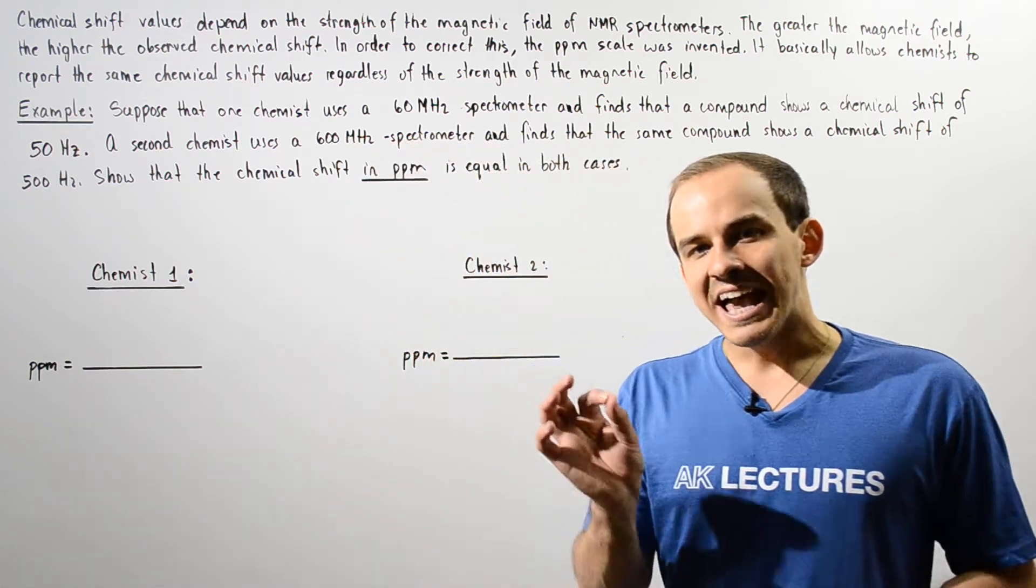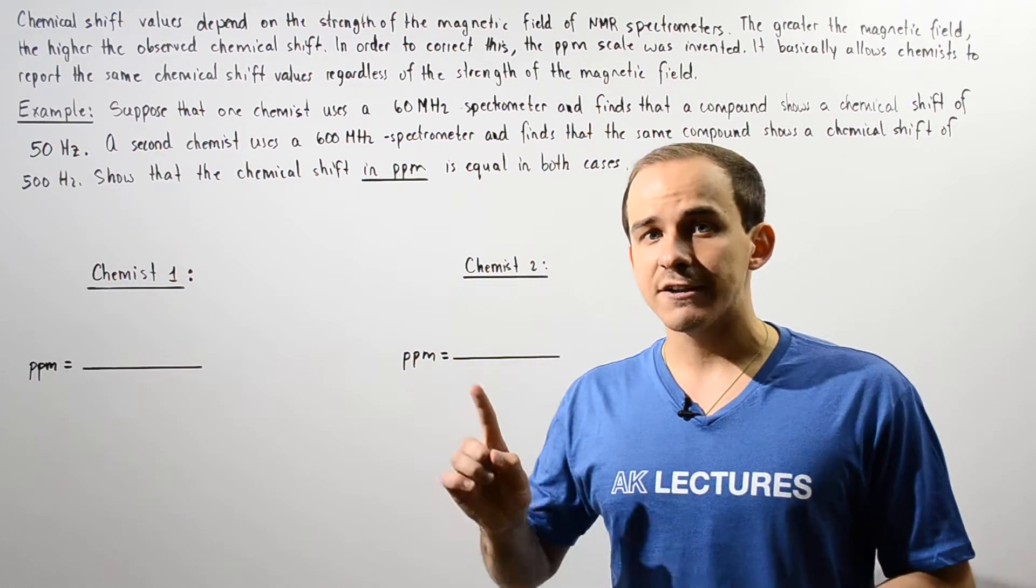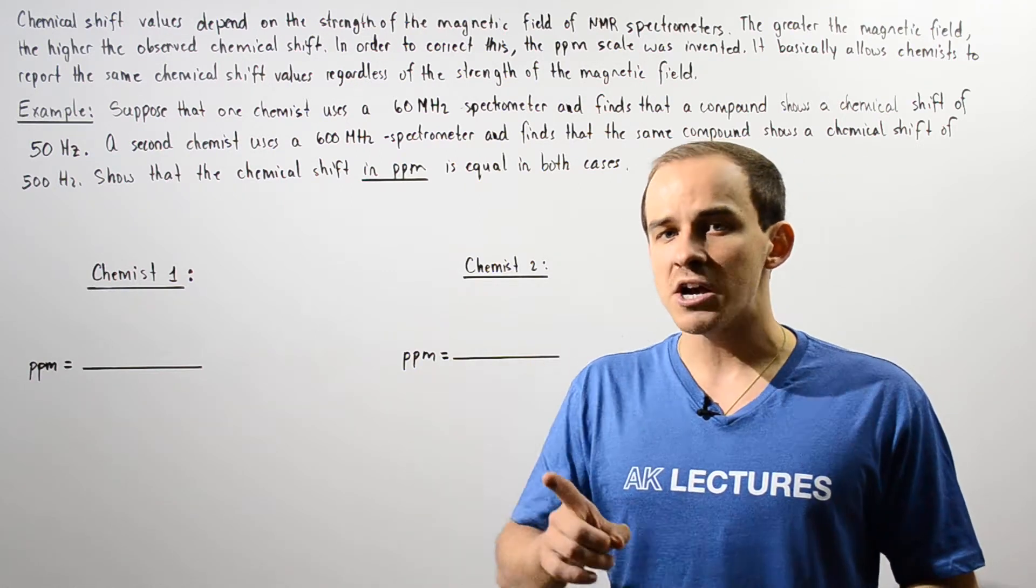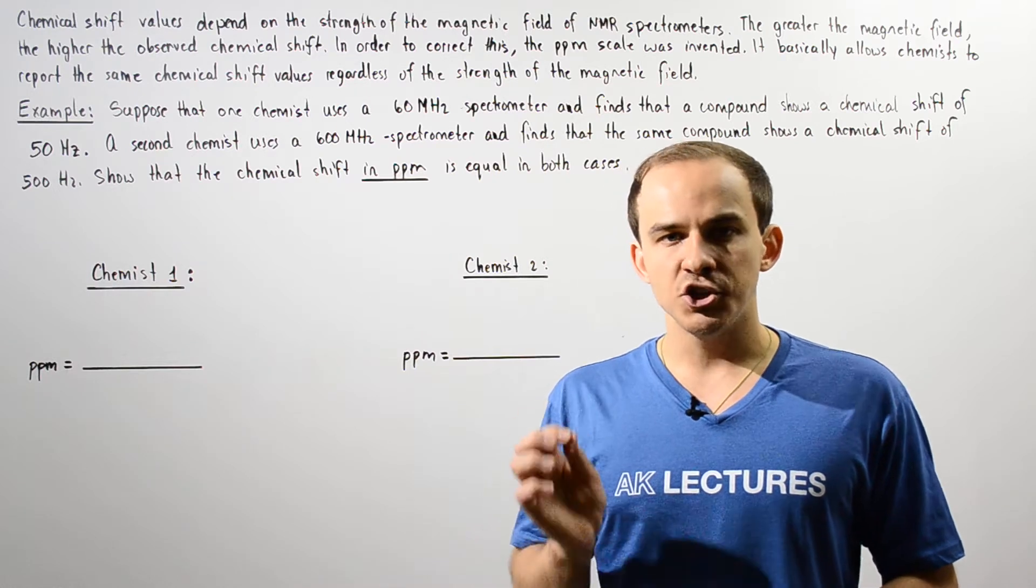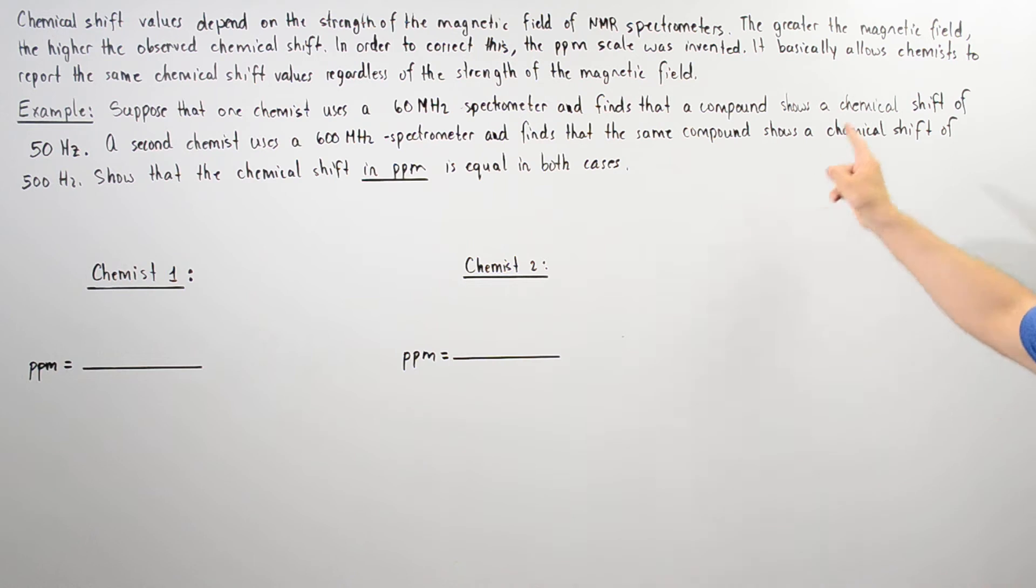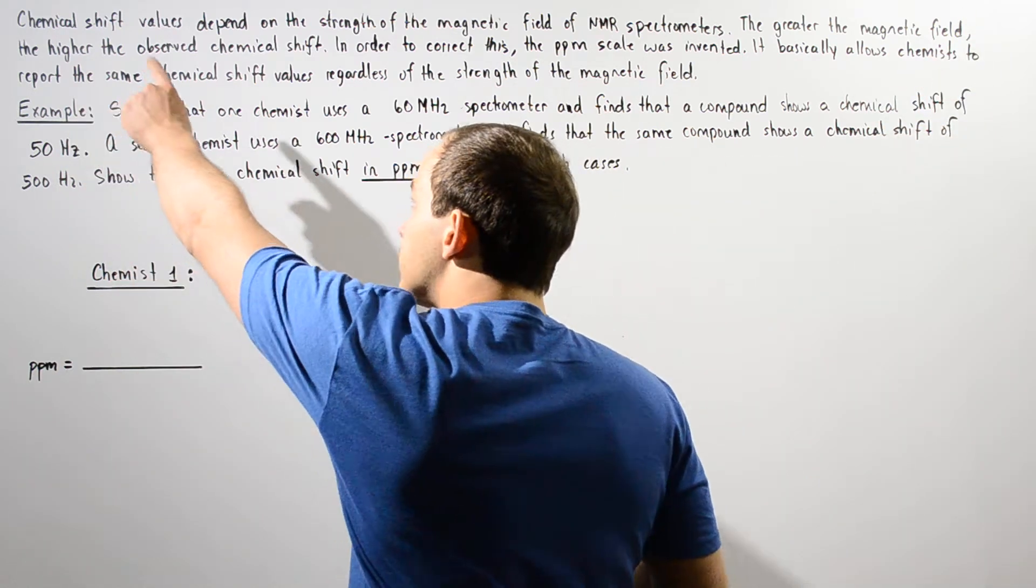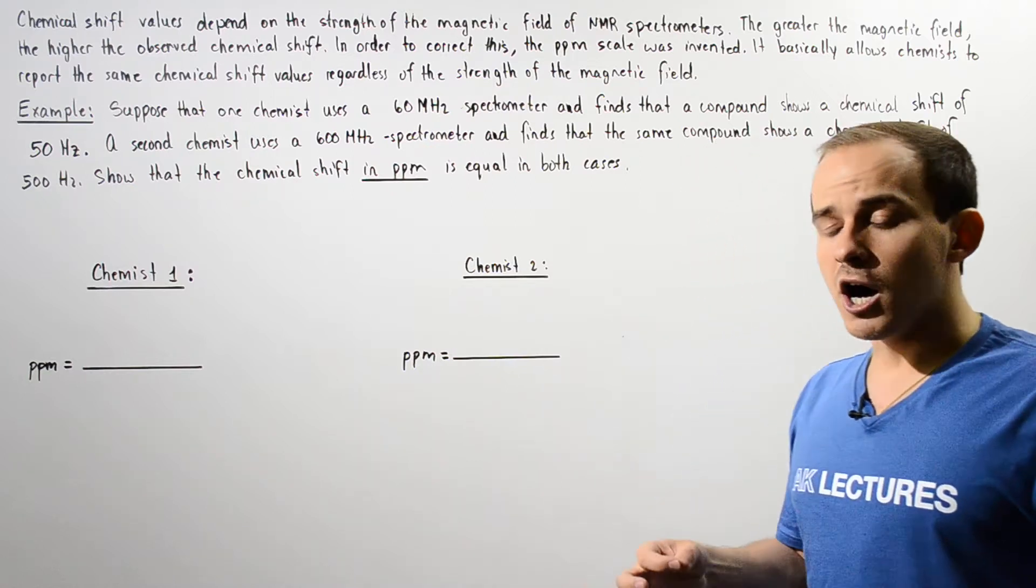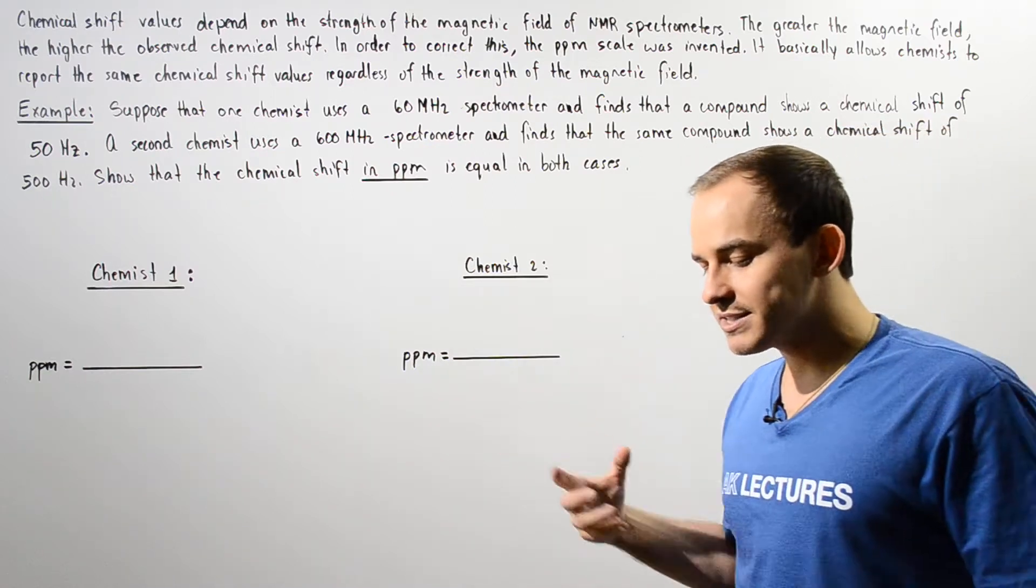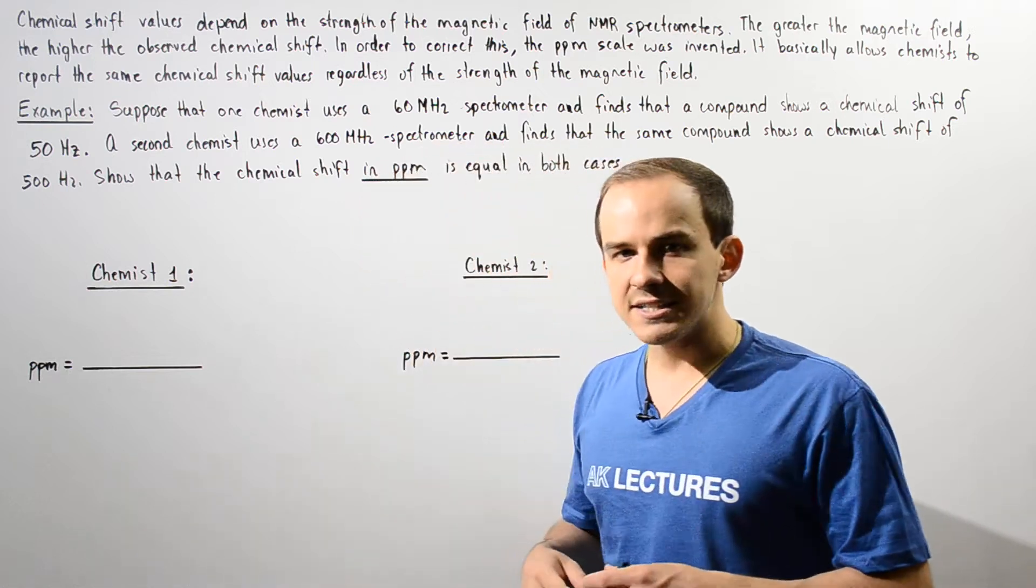Basically chemical shift values depend on the strength of the magnetic field of the proton NMR spectrometer that we are using. That is, the greater the magnetic field strength of that proton NMR spectrometer, the greater the observed chemical shift of our hydrogen atom inside our molecule.